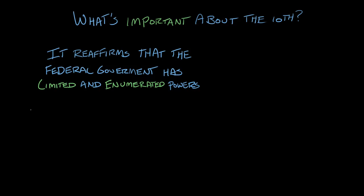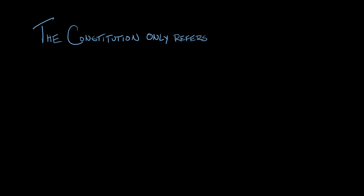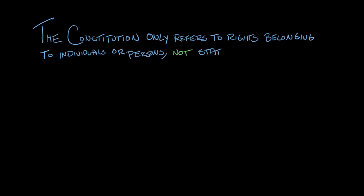Interestingly, in Congress they added the phrase 'or to the people' at the end. The states had not proposed that language — they proposed the wording would stop at 'reserved to the states.' That addition made the 10th Amendment less a states' rights provision than the states had wanted. Nowhere in the Constitution does it say anyone except individuals or persons have rights; it doesn't say states have rights. The 10th Amendment is about reserved powers — powers that the people have to govern themselves — and what this shows is that the people not only have rights, they also have powers.